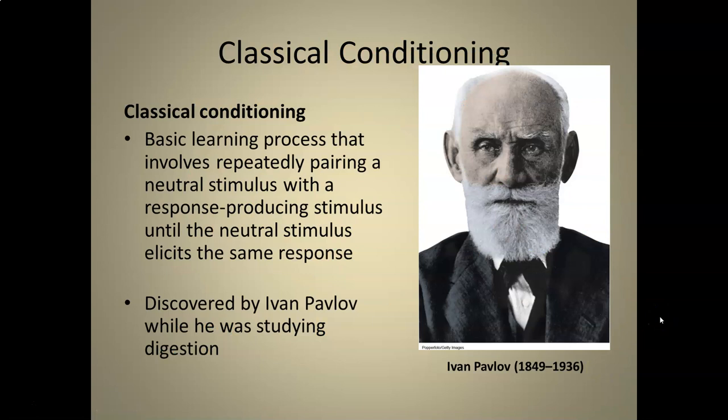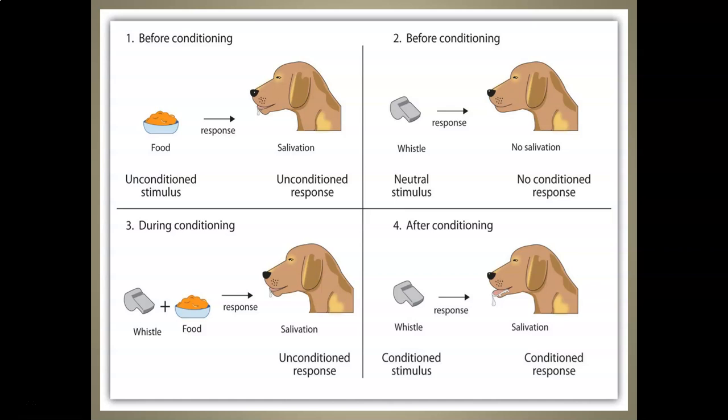In this video we are mostly concerned with classical conditioning. Classical conditioning is the basic learning process that involves repeatedly pairing a neutral stimulus with a response-producing stimulus until the neutral stimulus elicits the same response. Classical conditioning was discovered by Ivan Pavlov while he was studying digestion. He was a physiologist working from the mid-1800s to the early 1900s.